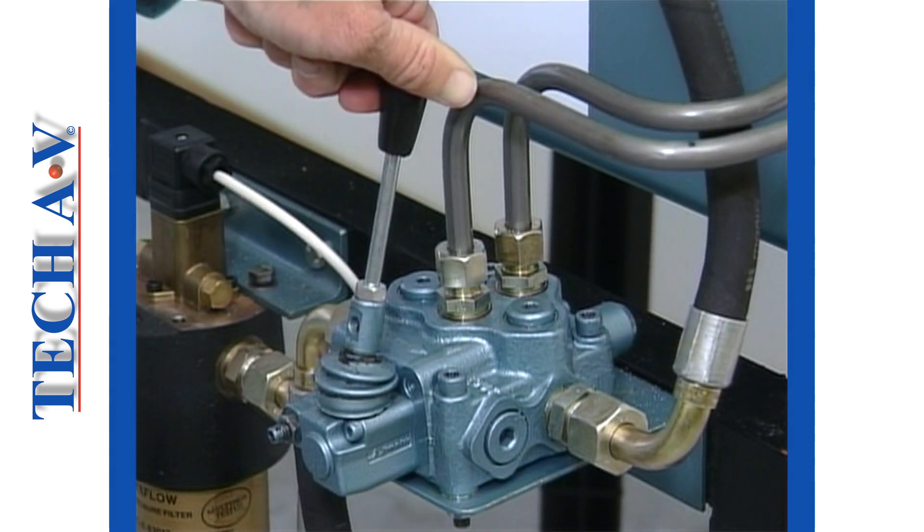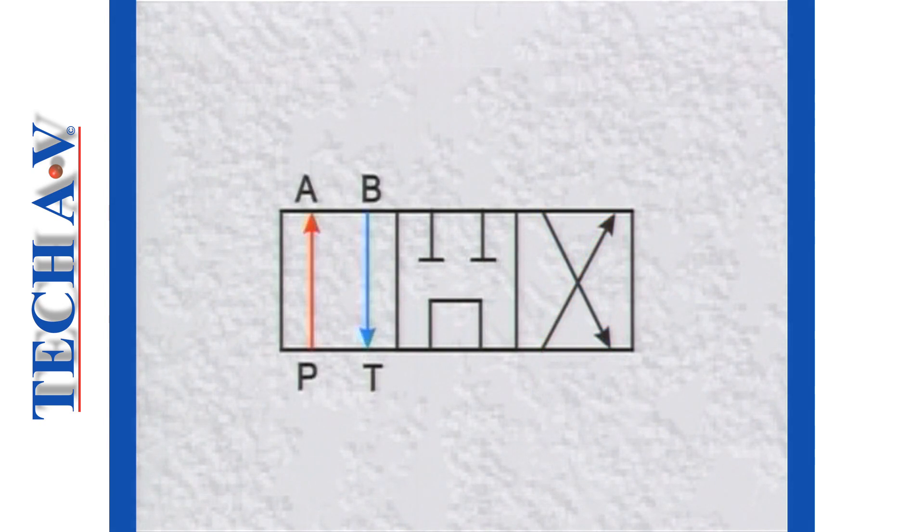In the retract position, flow is switched to direct the input between port P and port A. The return flow enters via port B and exits through port T.